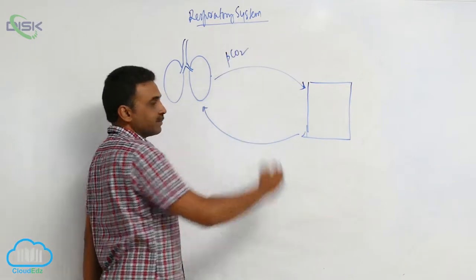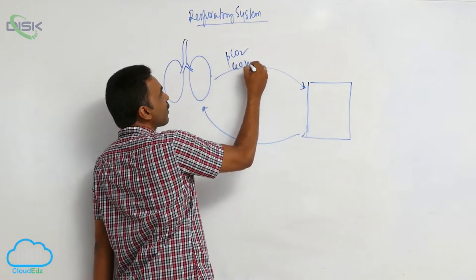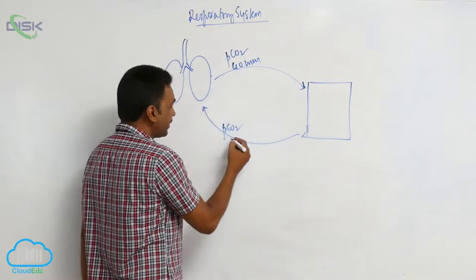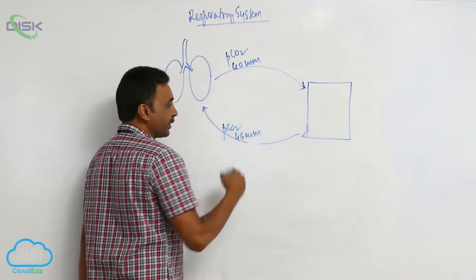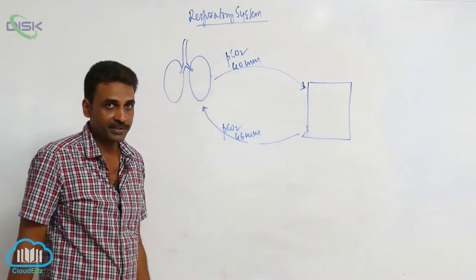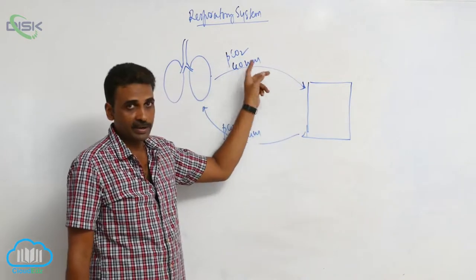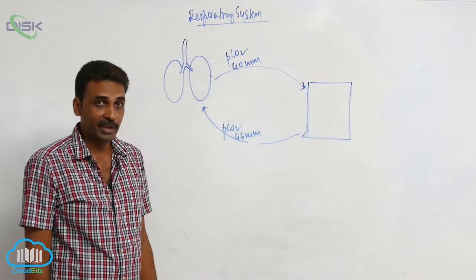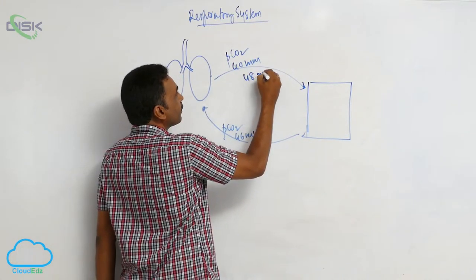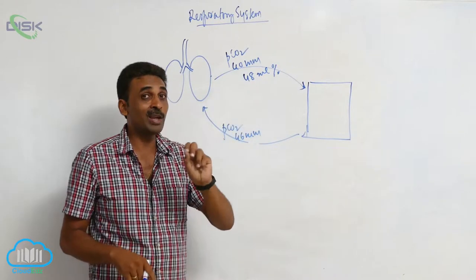When we consider the partial pressure of carbon dioxide in the arterial and venous blood: the partial pressure of carbon dioxide in the arterial blood is around 40 millimeters of mercury, whereas in the venous blood it is around 46 millimeters of mercury. The partial pressure of carbon dioxide in the arterial blood — from lungs to tissues — is 40 millimeters of mercury, and under this partial pressure, the amount of carbon dioxide present for every 100 ml of blood is 48 ml.